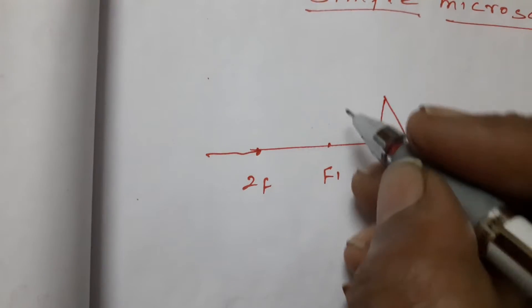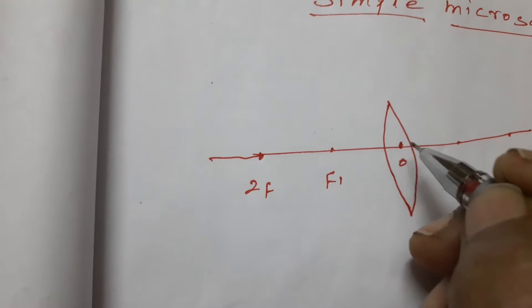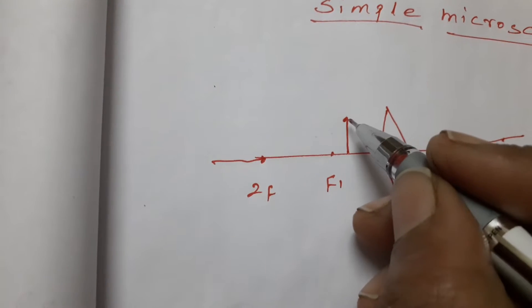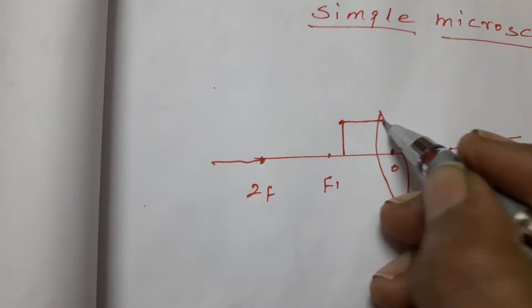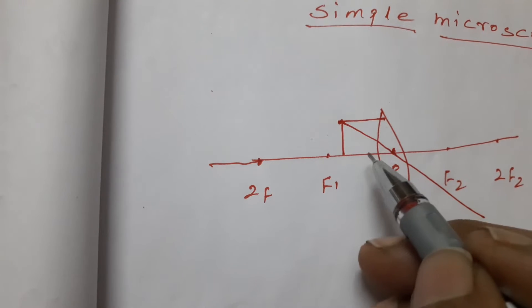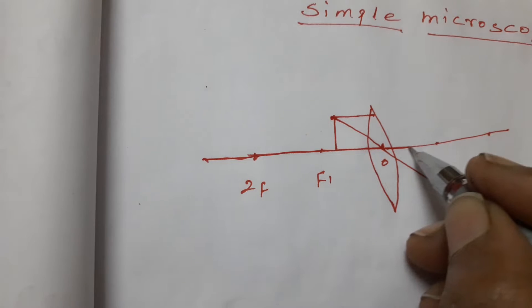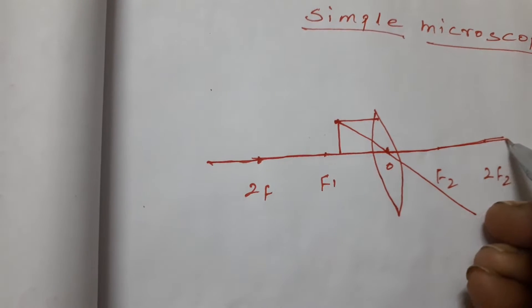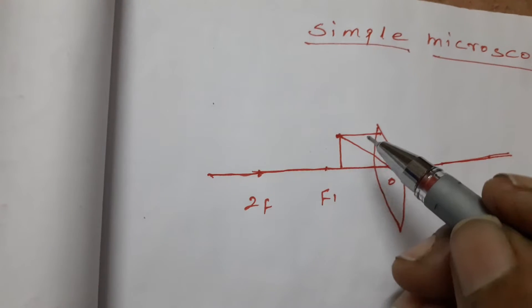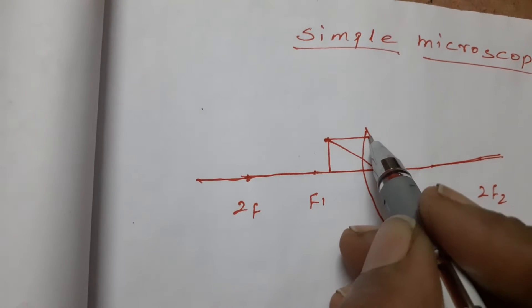Keep the object in front of the lens, in between the optic center and focal point. What are the two rules? The first ray is parallel to the principal axis, and the second ray passes through the center. The principal axis is the line passing through the optic center, the focal point, and the center of curvature. The parallel ray, after refraction, will pass through the focus.